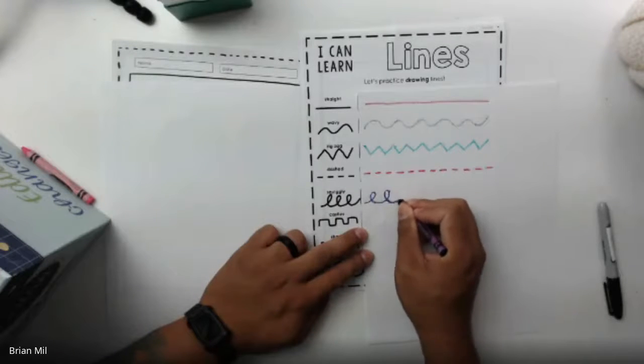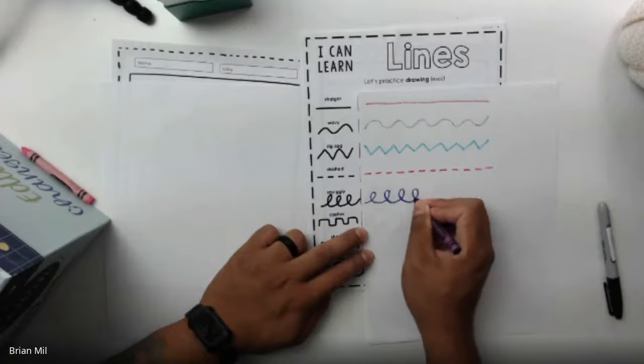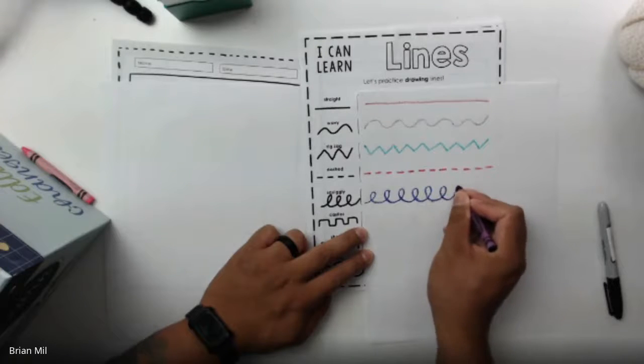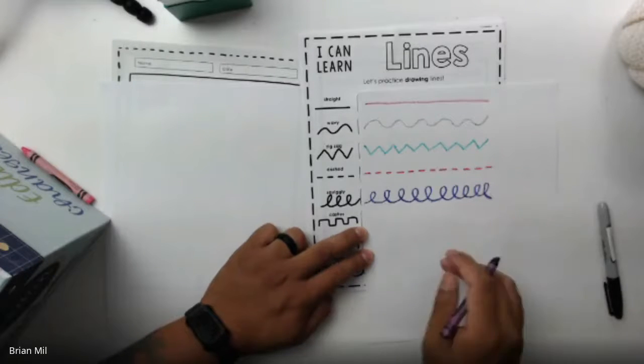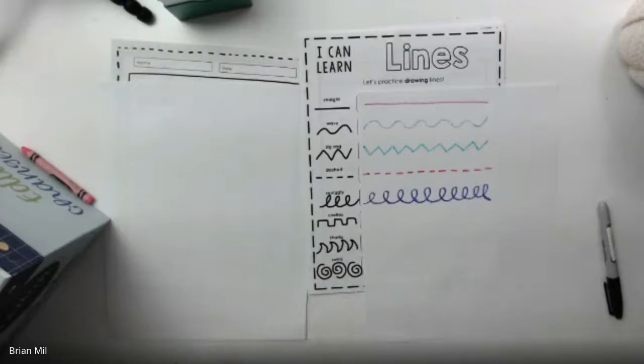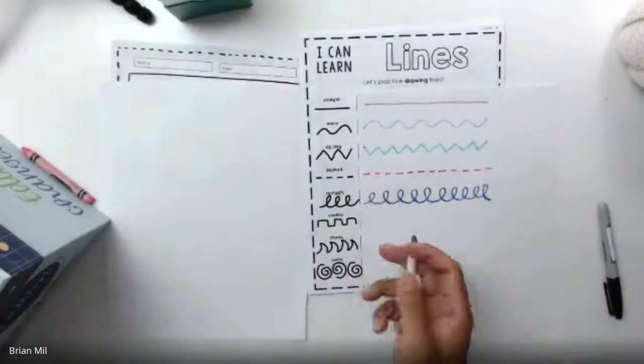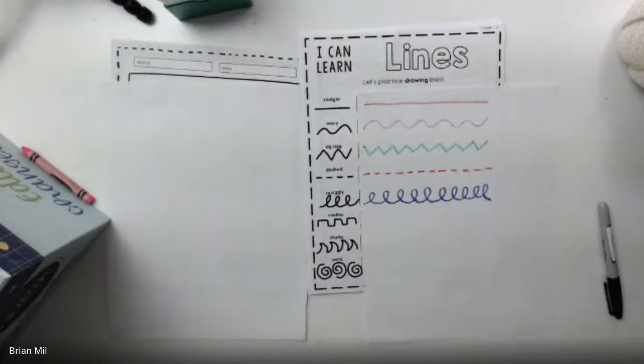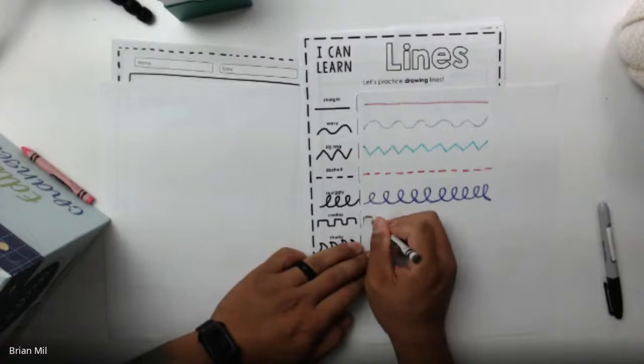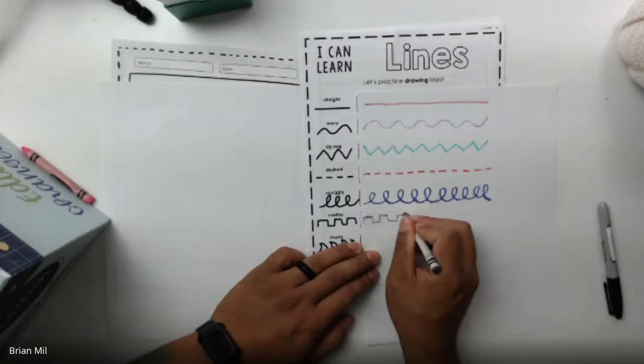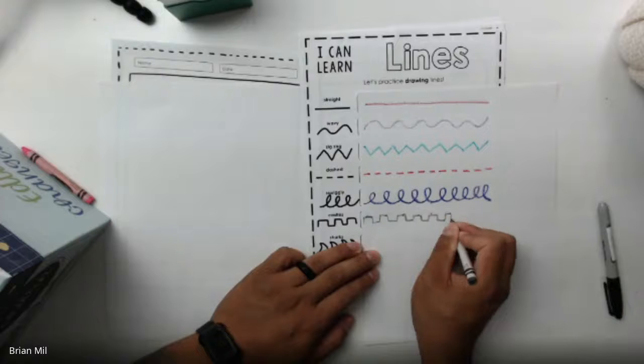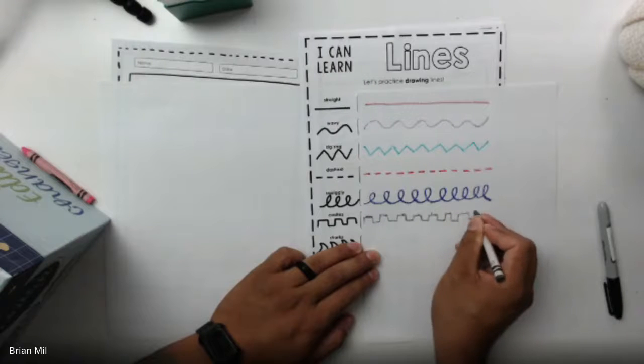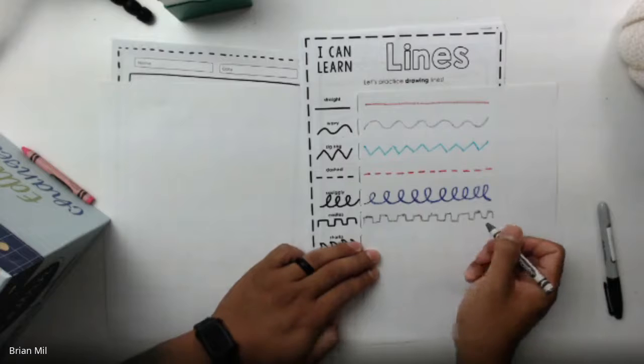The next one is called squiggly, or I like to call it loop-de-loops. So I'm just going to loop it up like this. Just like that. Pretty cool. All right, the next one is a favorite of mine. This one's called castle lines. I bet you guys can guess where the name came from, to make it look like a castle.